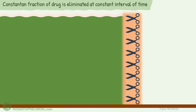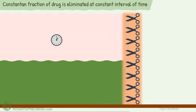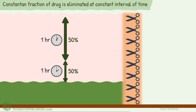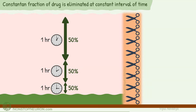Now let's see the second point: constant fraction of drug is eliminated at constant interval of time. Let's start with this much drug in the blood. With time it is eliminated, and let's say in one hour this much drug is eliminated — this is 50% of the starting level. Now we have this much drug remaining in the body. In the next one hour, 50% of this remaining drug is eliminated. And in one more hour, 50% of that remaining drug is eliminated. Thus in this example, a constant fraction — that is 50% of the drug — is eliminated at a constant interval of time, that is 1 hour.